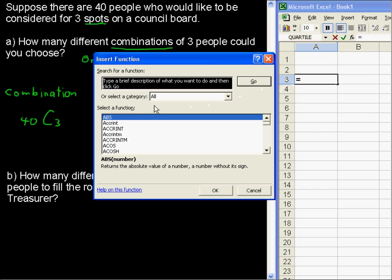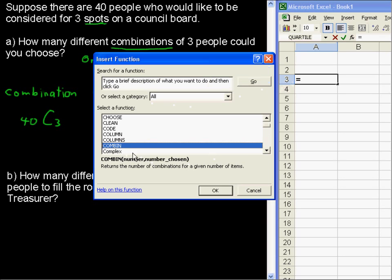Interestingly enough, this is not found under statistical category, so I just went to the all category, and I'm just going to scroll down until I find the C and the COMBIN. Here it is, COMBIN.